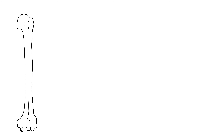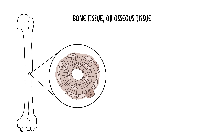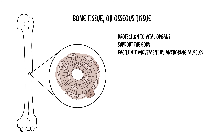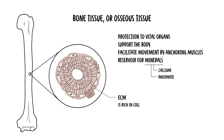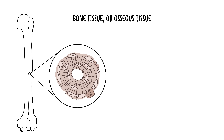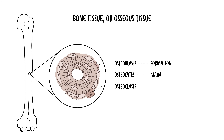Bone is also a connective tissue. Bone tissue, or osseous tissue, forms the rigid structure of the skeleton and is a dynamic living tissue that continuously remodels itself. Bones provide protection to vital organs, support the body, facilitate movement by anchoring muscles, and serve as a reservoir for minerals like calcium and phosphate. The extracellular matrix of bone is rich in collagen fibers and mineral salts. Bone cells include osteoblasts, osteocytes, and osteoclasts, involved in the formation, maintenance, and resorption of bone tissue.